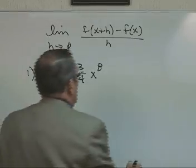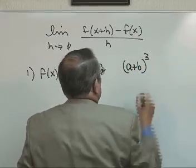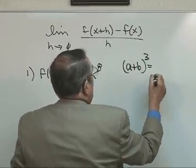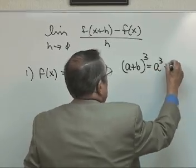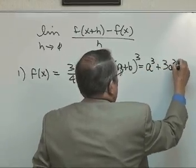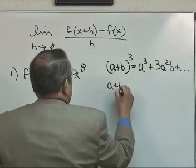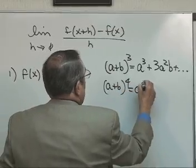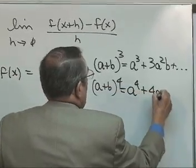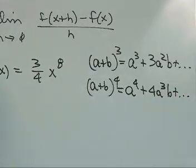And you recall back in binomial expansion we had a plus b cubed and we were told to expand that. And that became a cubed, 4a cubed plus 3a squared b plus something. And if we were told to expand a to the 4th, that would become a to the 4th plus 4a cubed b. And it goes on.